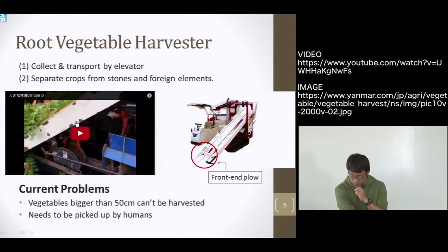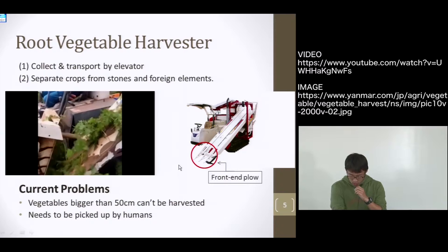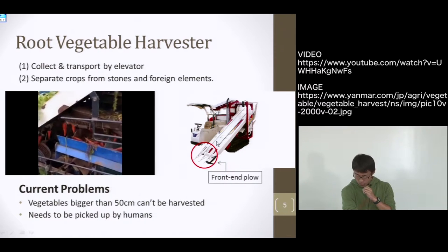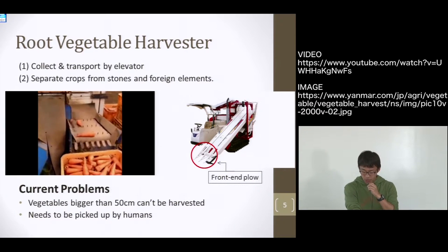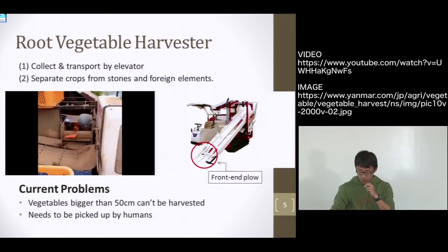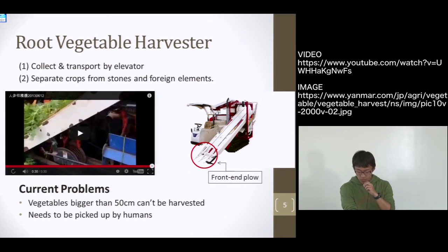Now, I'm going to explain the each method of root, leaf, fruit harvest one by one with video. First is root vegetable. This is carrot harvester. Using front end plow, it digs up underground crops and feeds them onto the elevator. While the elevator carries crops upwards, small debris falls down. Crops are carried onto conveyor belt where they are separated from larger stone and admixture and graded. But this machine has current problems. Vegetables bigger than 50 cm cannot be harvested and need to be picked up by human.